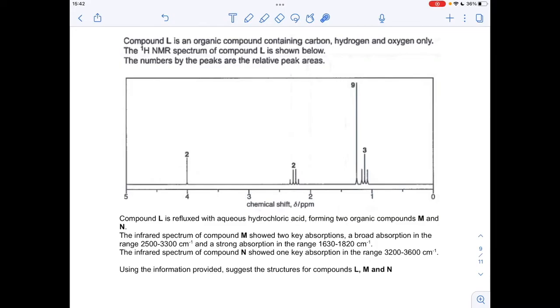So there's a little bit more to this one than the norm. As well as working out from the proton NMR spectrum the structure of L, we've also got to say what M and N are, because we're told that when compound L is refluxed with aqueous hydrochloric acid, we get these two organic compounds.